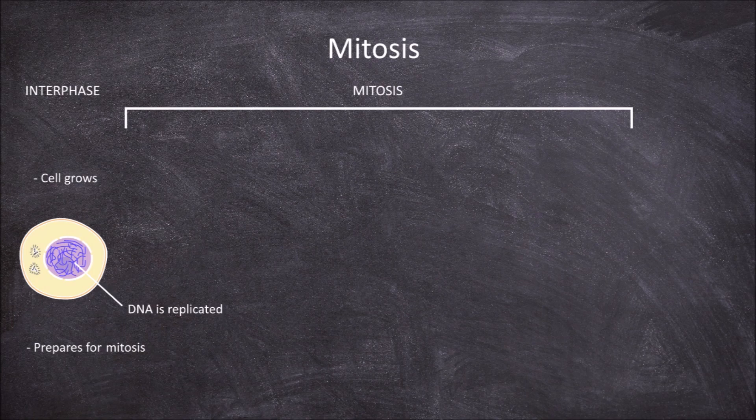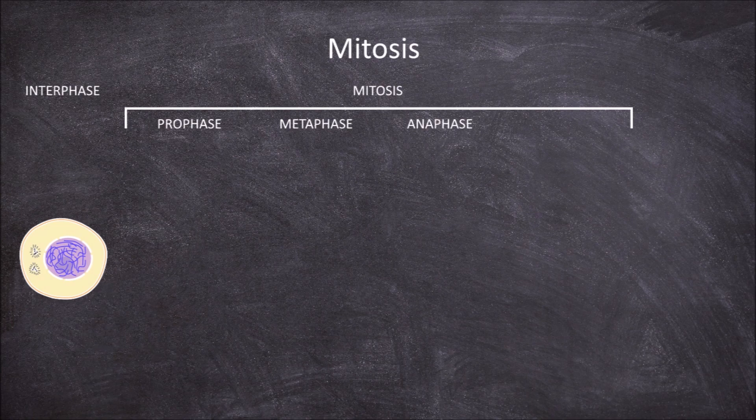There are four phases in the process of mitosis: prophase, metaphase, anaphase, and telophase. The first phase of mitosis is prophase.